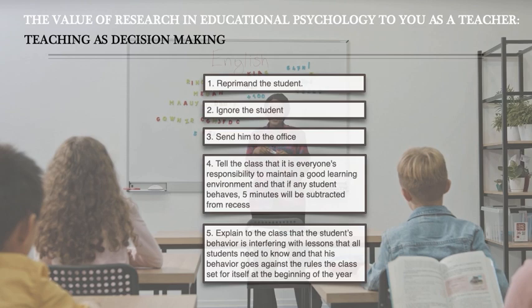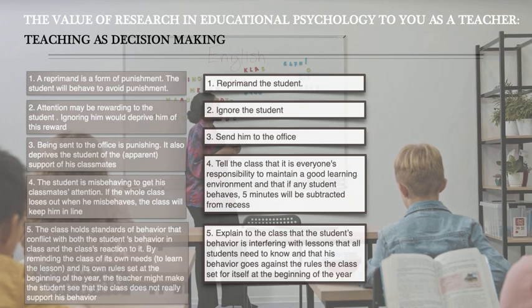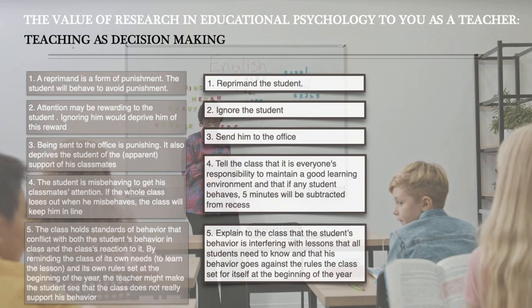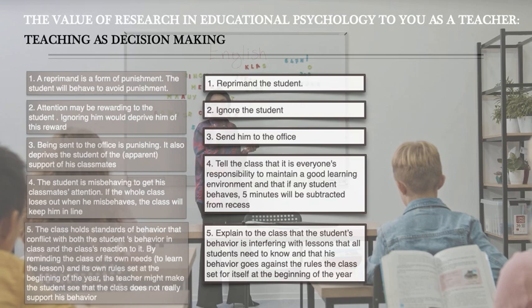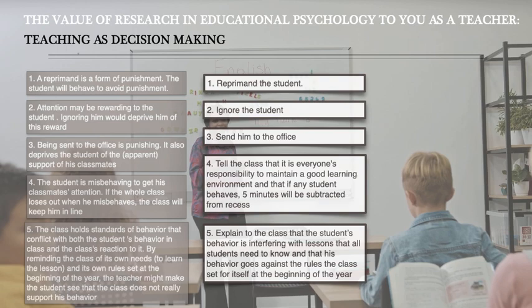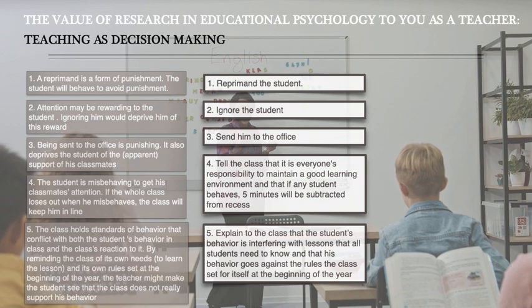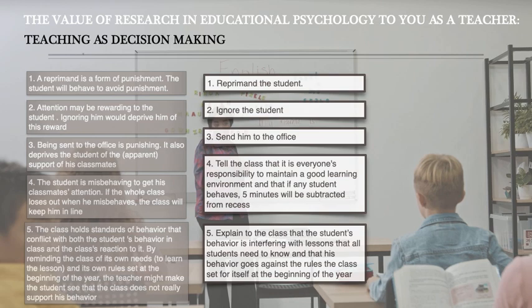Each of these actions has a theory behind it. A reprimand is a form of punishment — the student will behave to avoid punishment. Attention may be rewarding, so ignoring him would deprive him of that reward. Being sent to the office is punishing and deprives the student of his classmates' apparent support. If the whole class loses out when he misbehaves, the class will keep him in line. By reminding the class of its own needs and rules, the teacher might make the student see that the class does not really support his behavior.